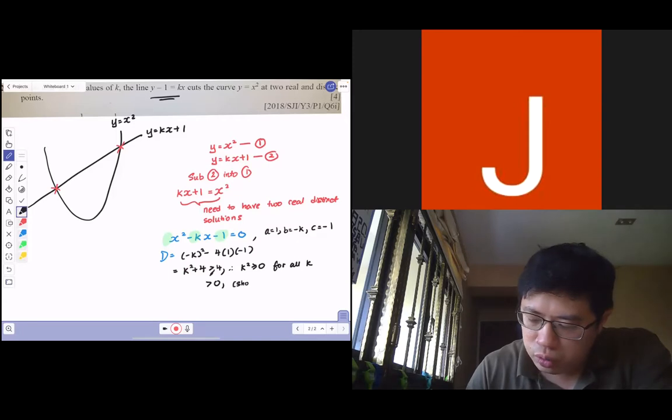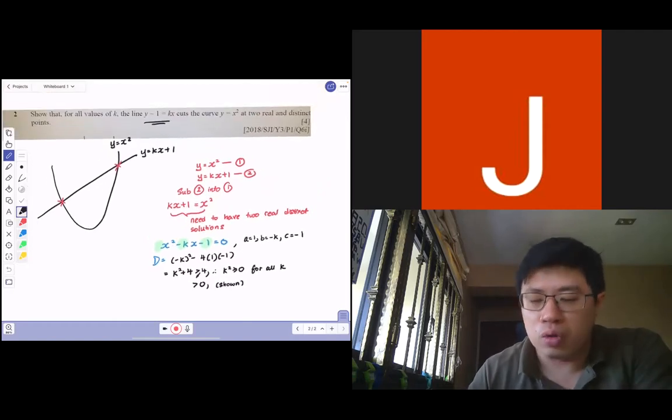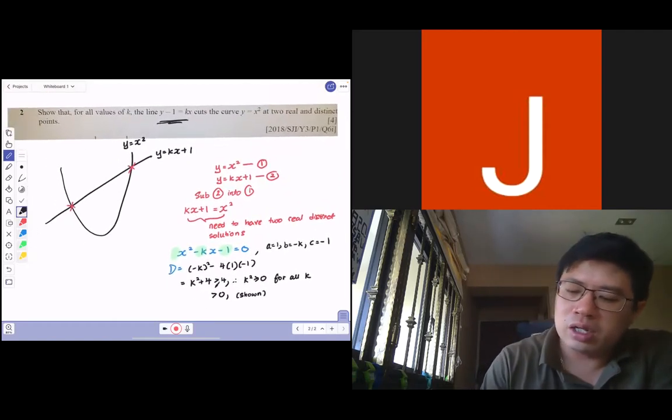Therefore, you have actually showed that your discriminant is always positive. If you have showed that your discriminant is always positive, you can conclude that the line cuts at two real distinct points.